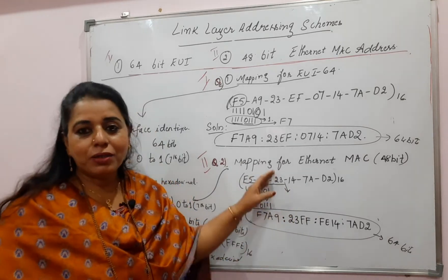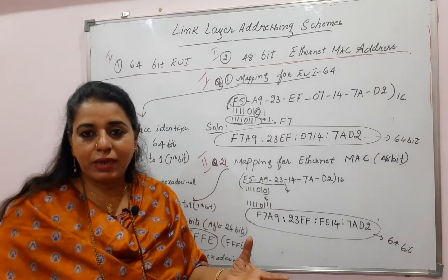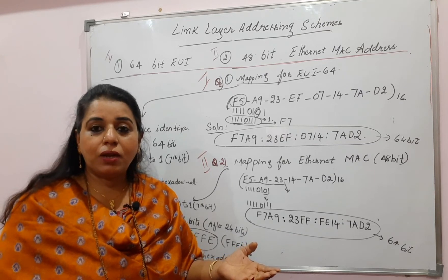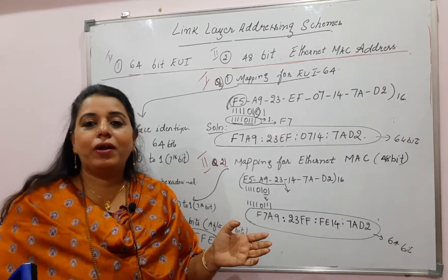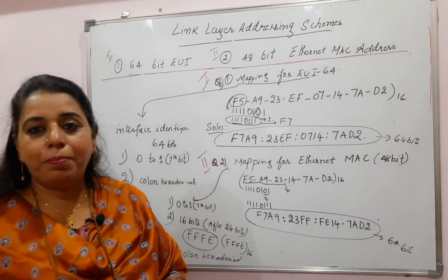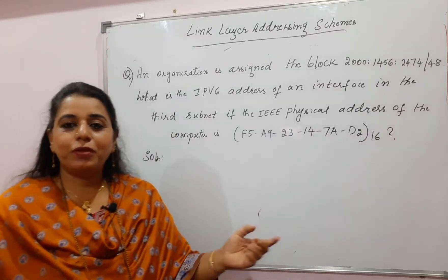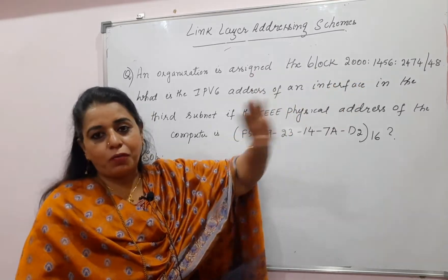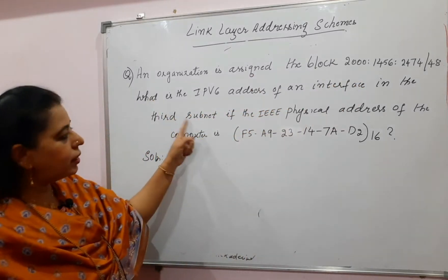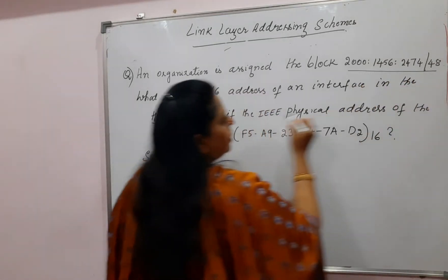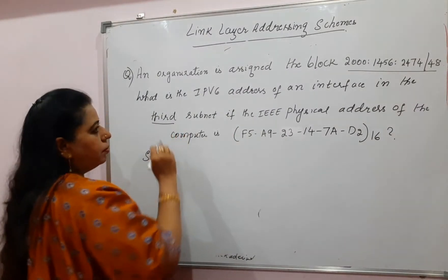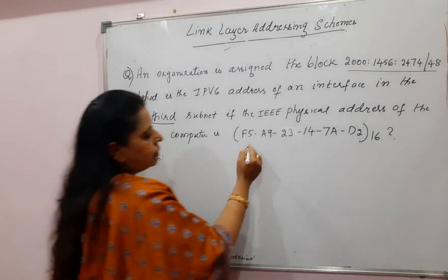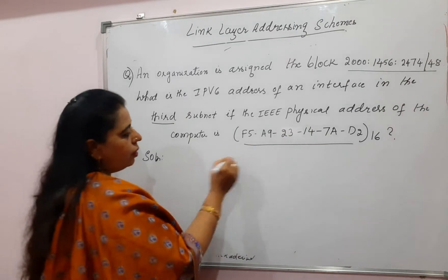There is a possibility of a third type of question: instead of just finding the interface identifier, you are asked to find the full IPv6 address itself. The IPv6 address consists of 128 bits. A question can look like this: an organization is assigned a block with a global routing prefix of 48 bits. What is the IPv6 address of an interface in the third subnet, if the IEEE physical address of the computer is given?